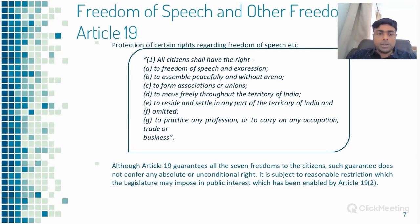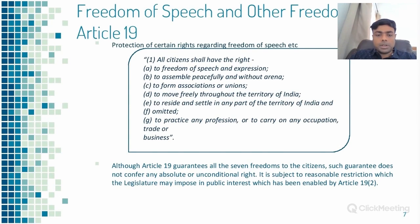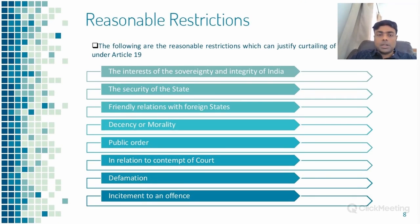Let's move on to Right to Freedom, Article 19 to 22. Article 19 talks about protection of certain rights regarding freedom of speech. There is, as we speak now, a lot of debate on freedom of speech — whether it is being stretched too far, abused, or curtailed. The Constitution describes it as: all citizens shall have the right to freedom of speech and expression, to assemble peacefully and without arms, to form associations or unions, to move freely throughout the territory of India, to reside and settle in any part of India, and to practice any profession or carry on any occupation, trade or business. It basically guarantees seven freedoms to citizens, but does not confer any absolute or unconditional right. It is subject to reasonable restrictions which the legislature may impose in public interest, as mentioned in Article 19(2).